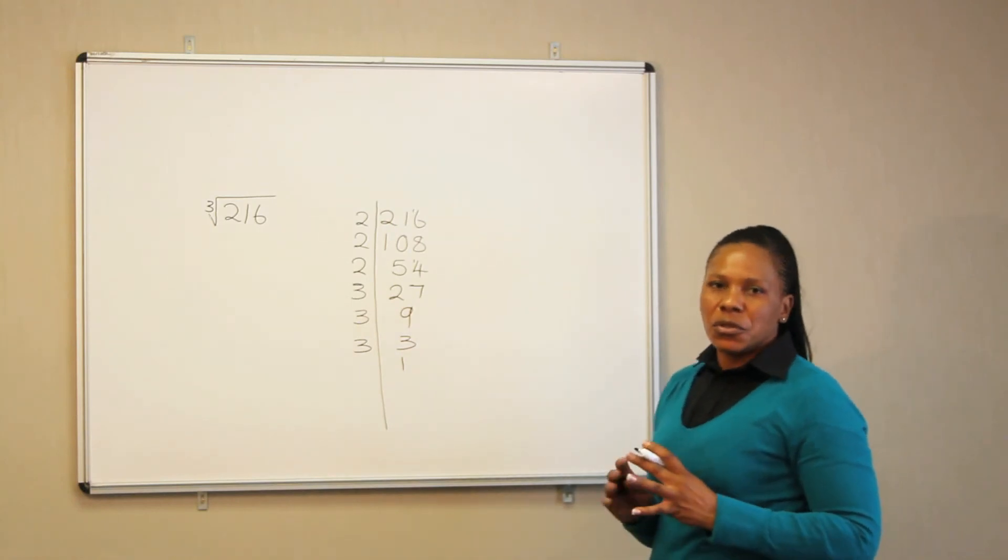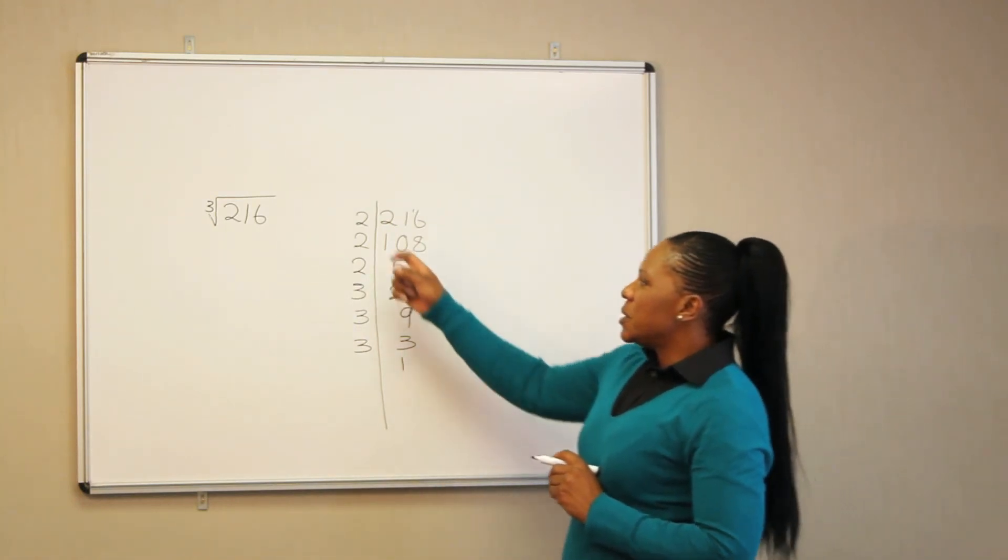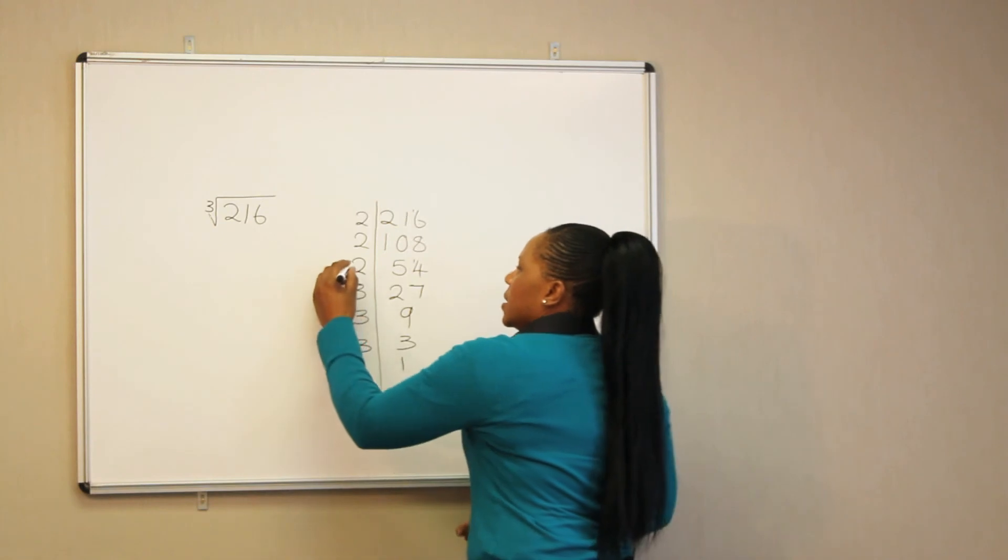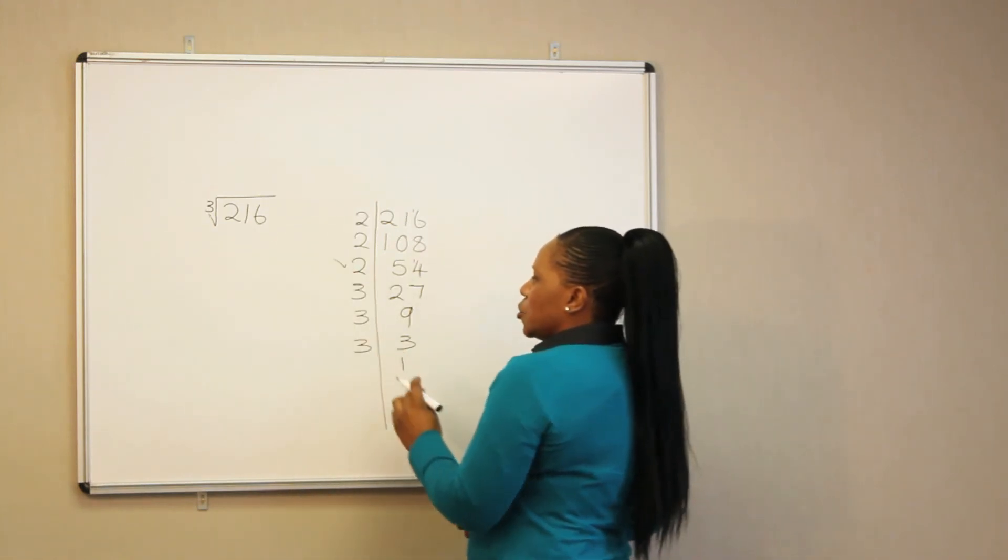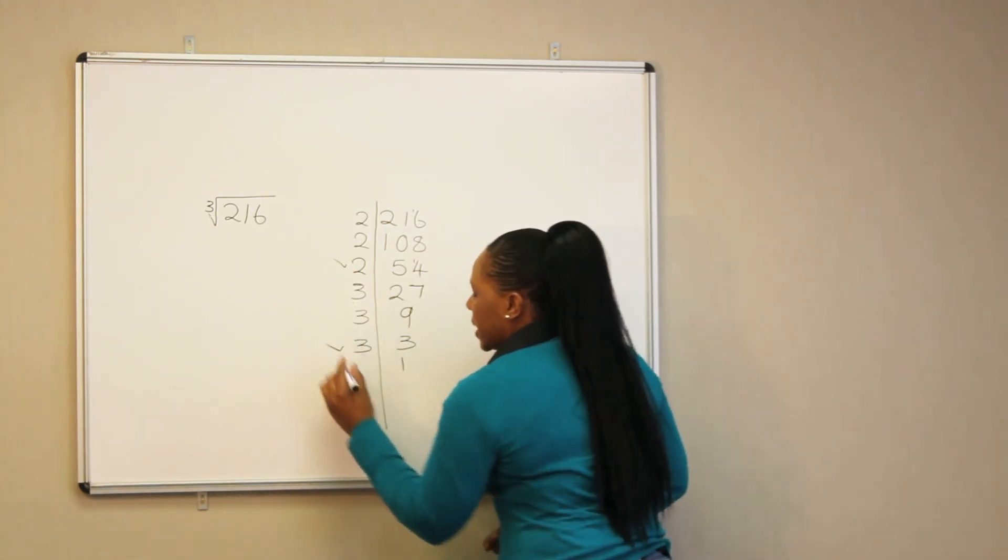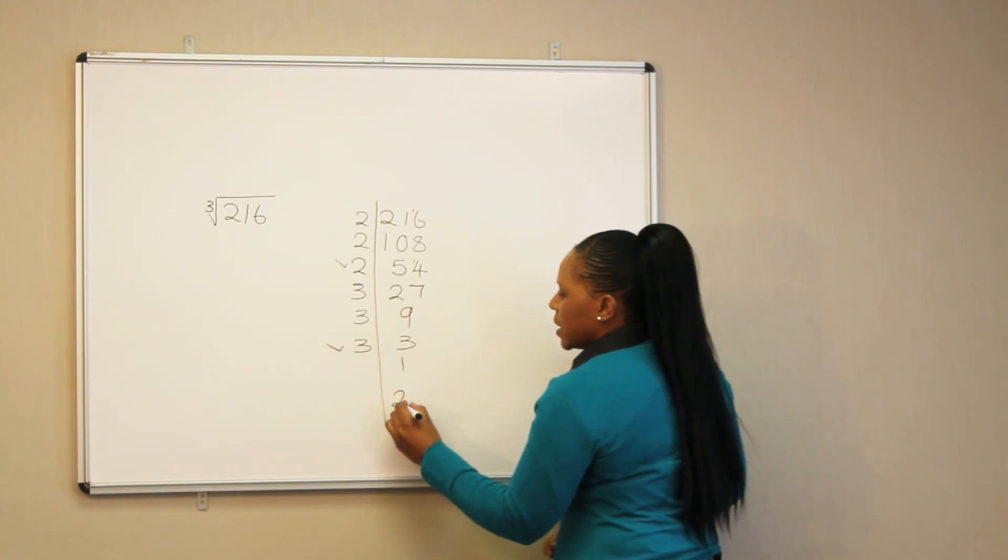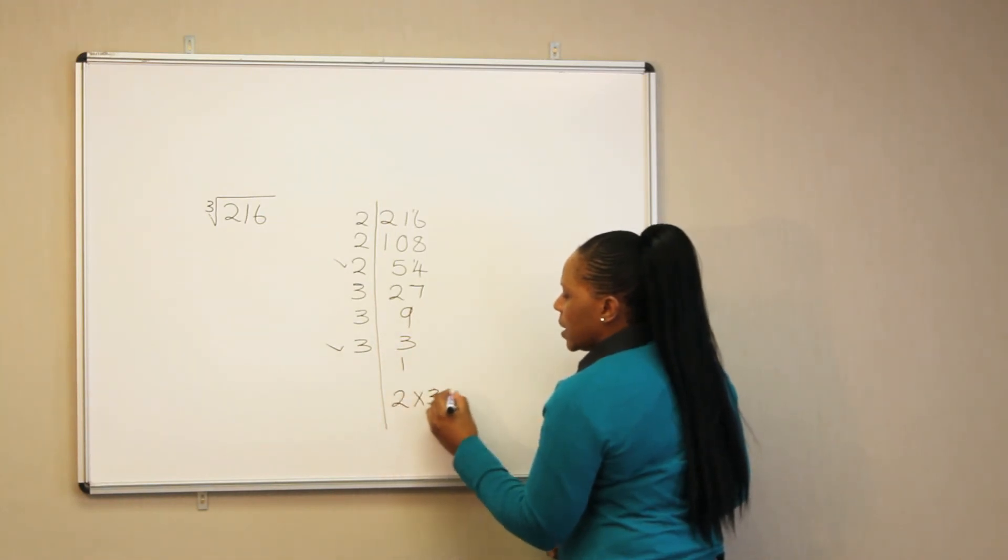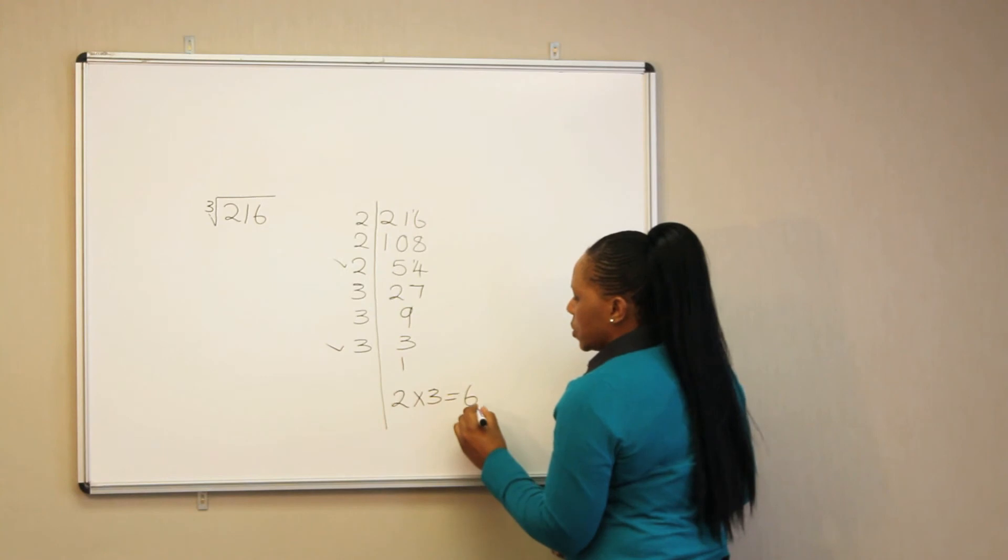Since we are looking for a cube root, we must choose the third factor. So in this case, we are taking 2, and then we take 3, which means 2 multiplied by 3 is equal to 6.